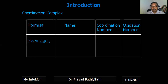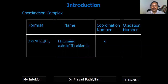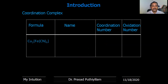Its coordination number is six, meaning the central metal atom is connected to six ligands. The number of attached molecules or groups of molecules present is called the coordination number in coordination chemistry. The oxidation number of the central metal atom is mentioned in the name itself — that is, +3. The next example is Cu₂[Fe(CN)₆], copper hexacyanoferrate, with coordination number six and oxidation number two.